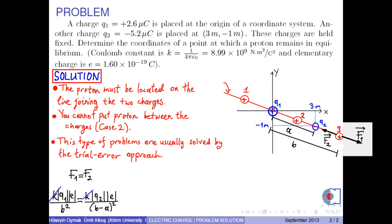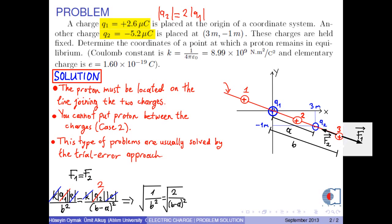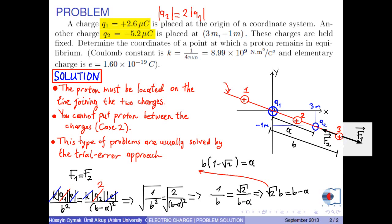Here, K's are cancelled and E's are cancelled. Since |Q2| is twice |Q1|, we obtain the equality 1/B² = 2/(B − A)². Taking the square root of both sides gives 1/B = √2/(B − A), from which √2·B = B − A, or B(1 − √2) = A.